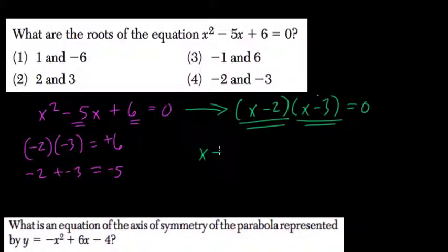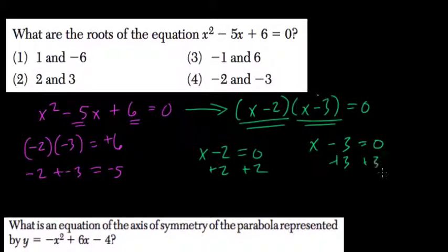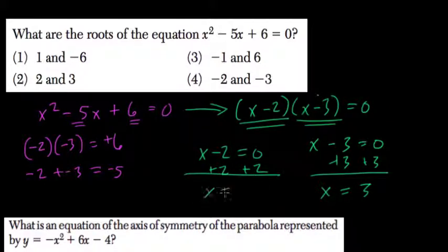And to solve it, we set both equal to 0. So x minus 2 equals 0, x minus 3 equals 0. Add 2 to both sides here, add 3 to both sides here. So x equals 3, and x equals 2.